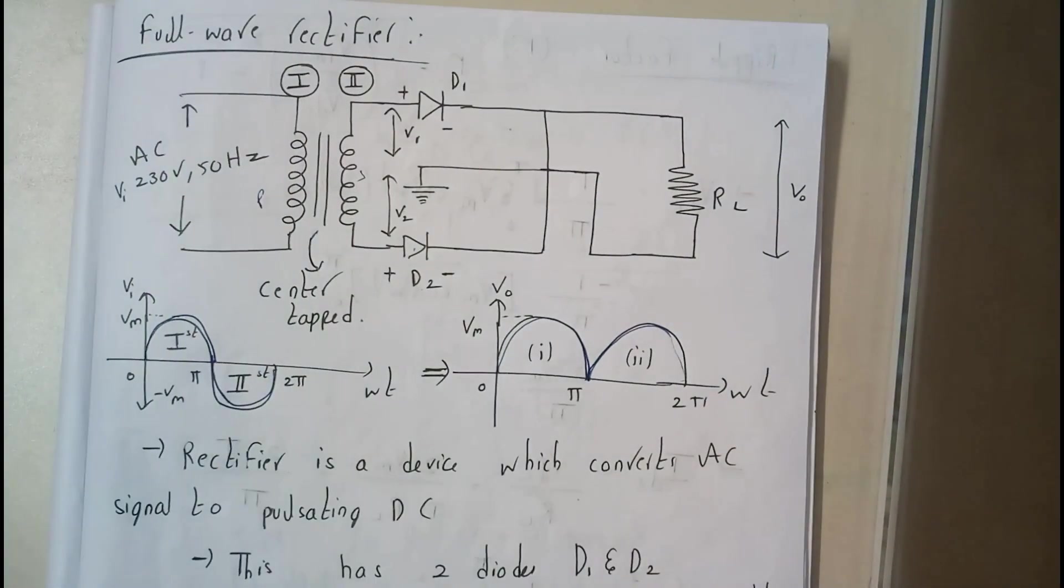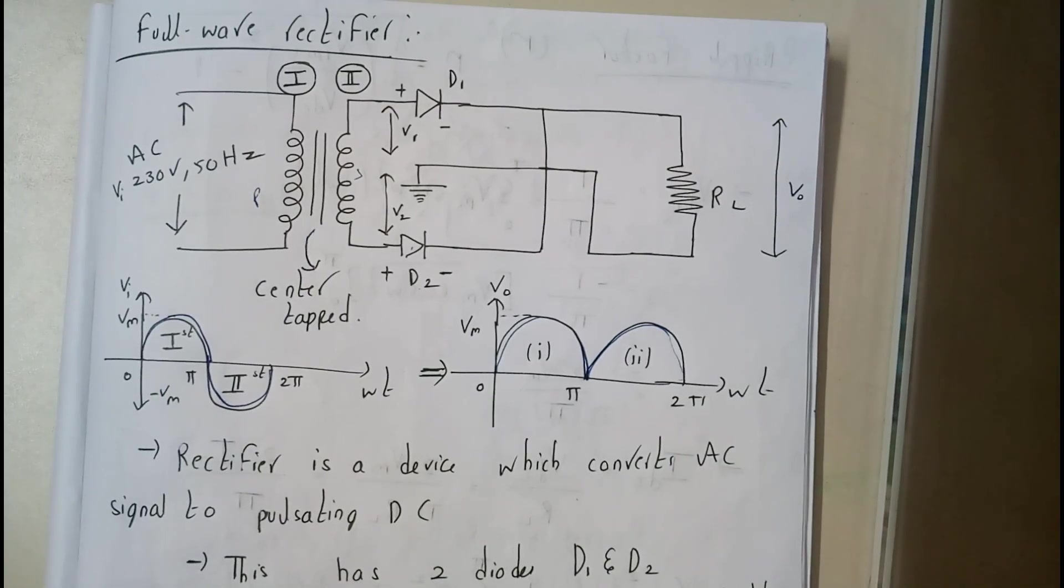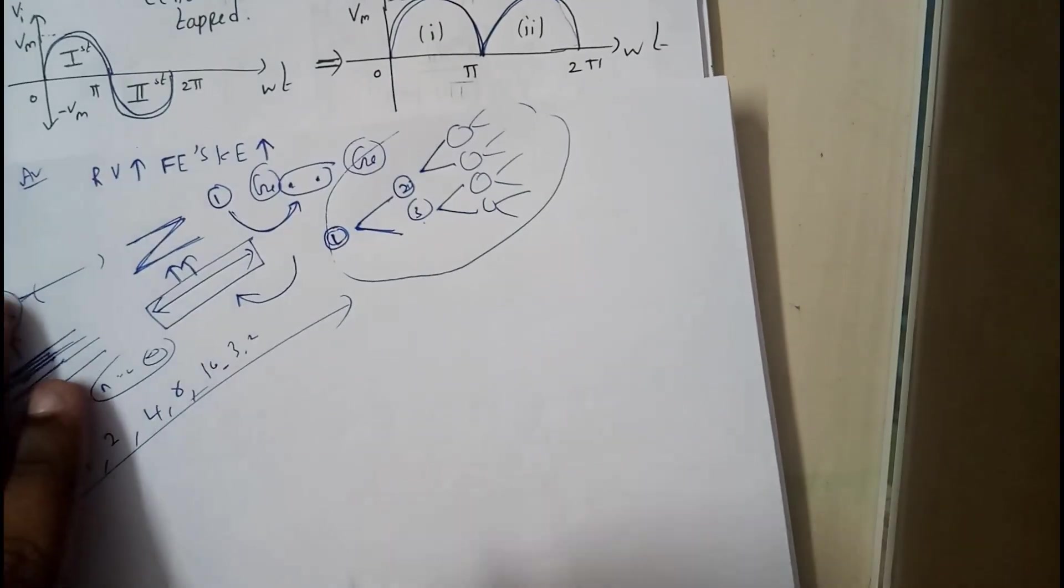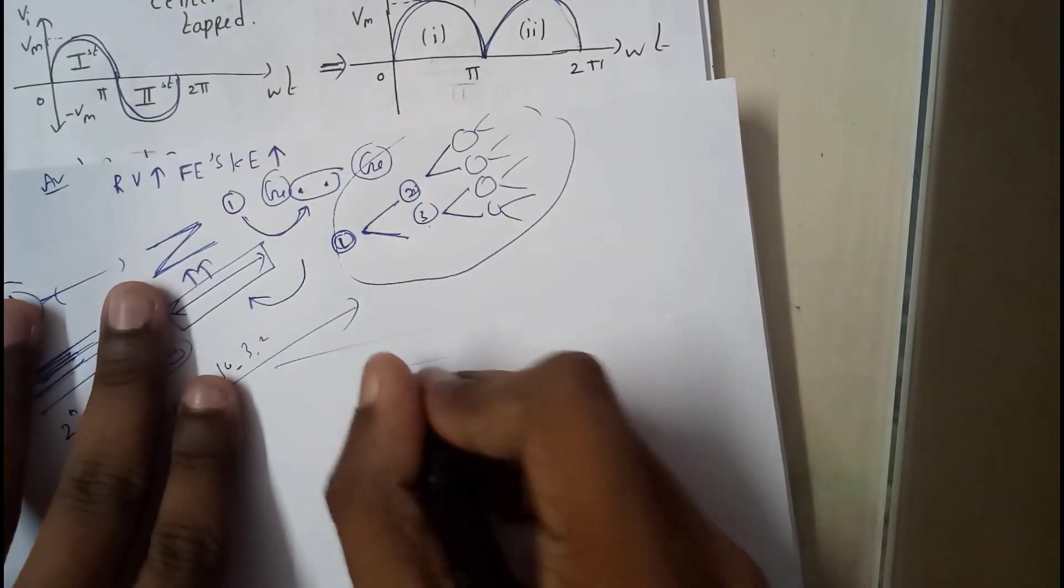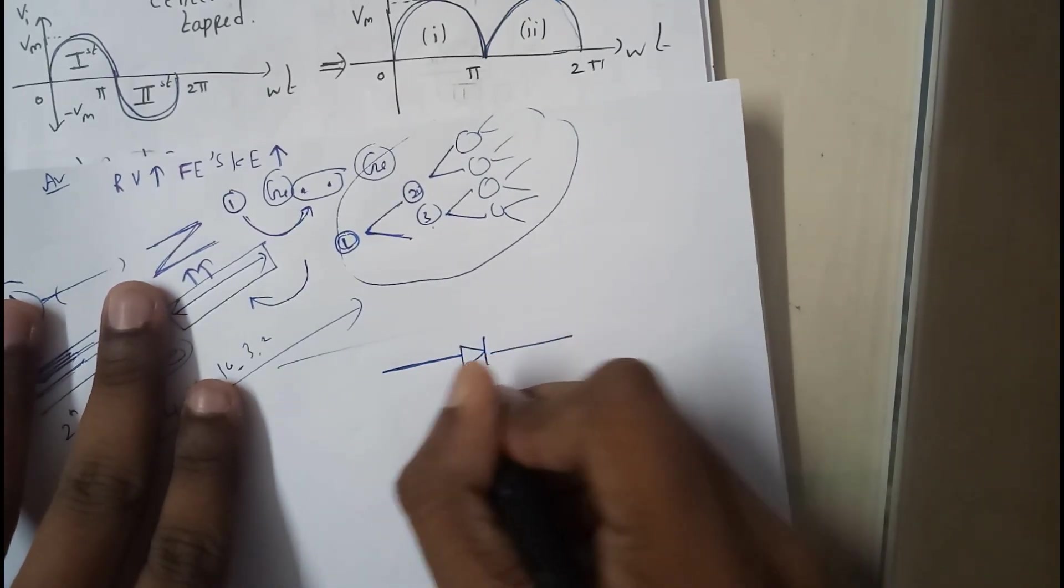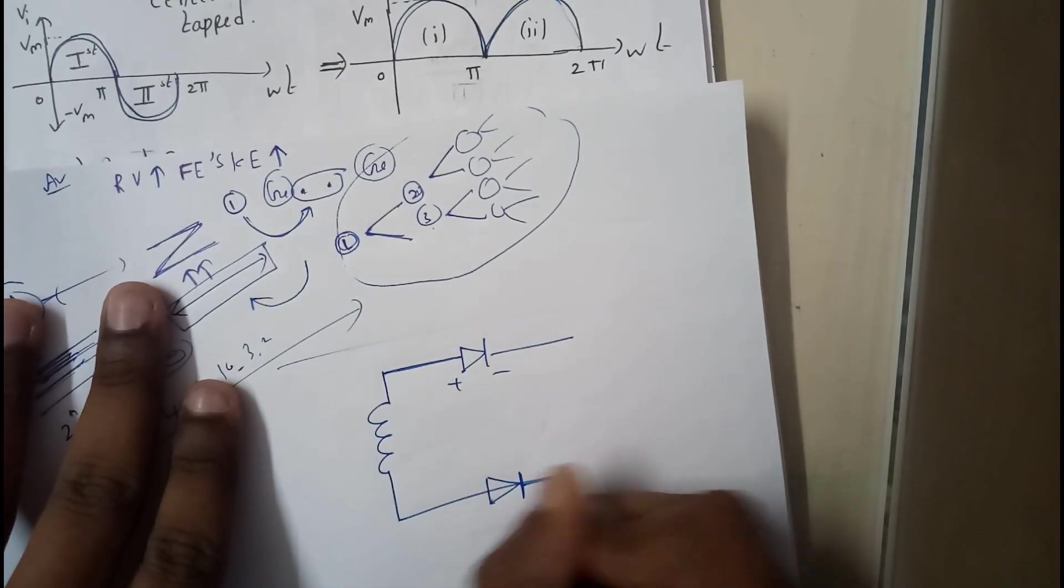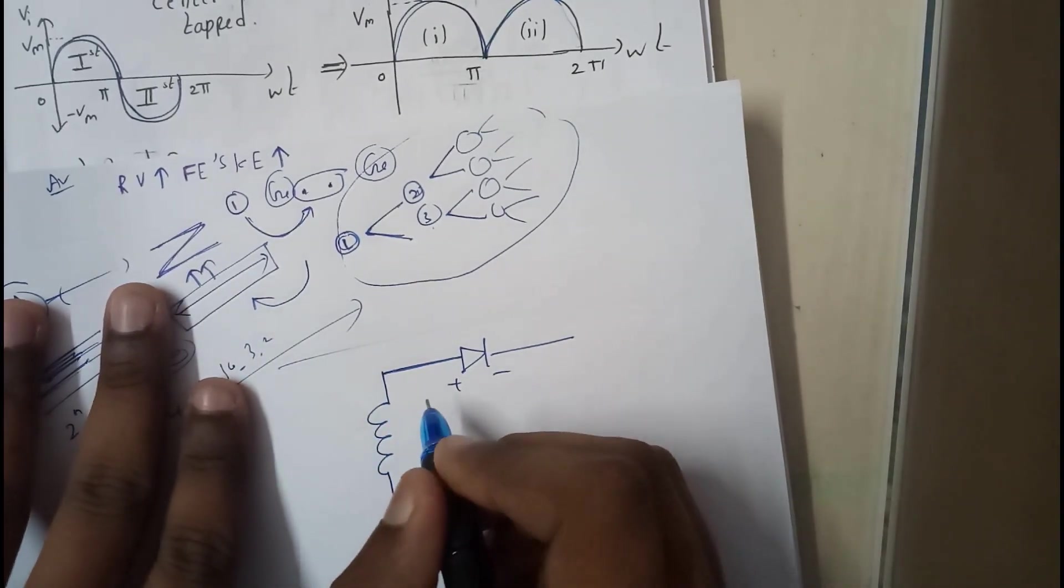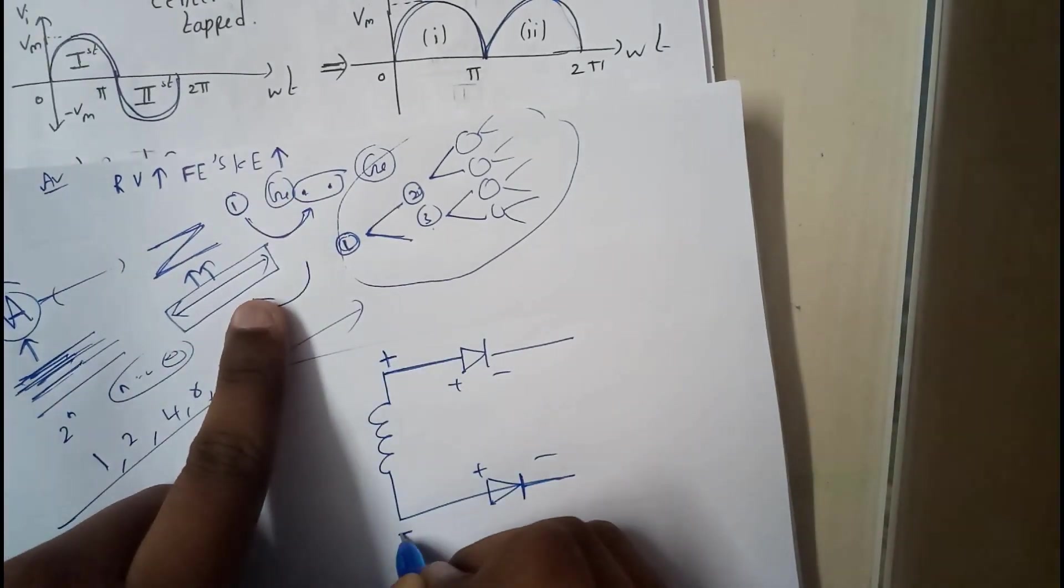So how does that happen? Shall we go through it right now? I'll be drawing it on paper. Basically, the diode is like this: positive, negative. And here we are having a winding and here we are having another diode, positive, negative.